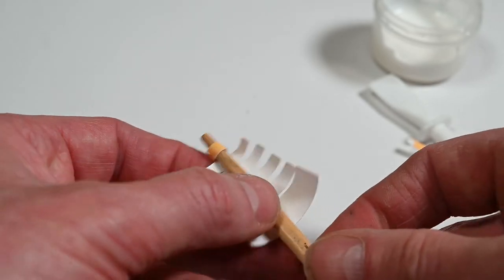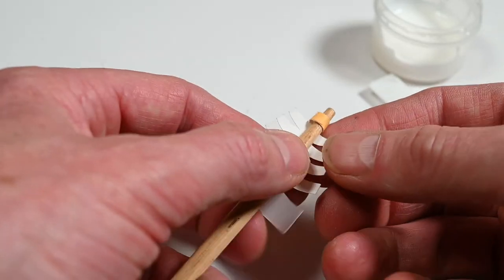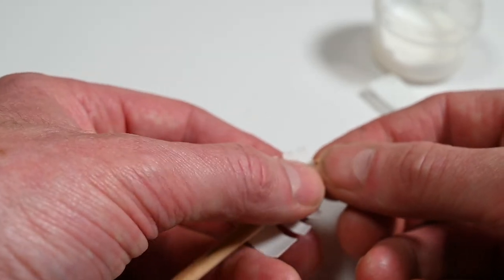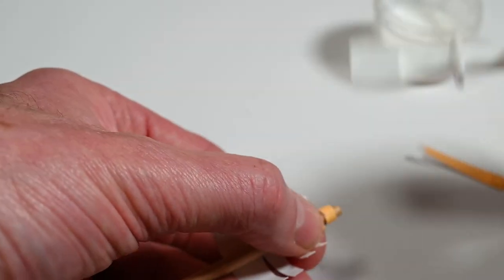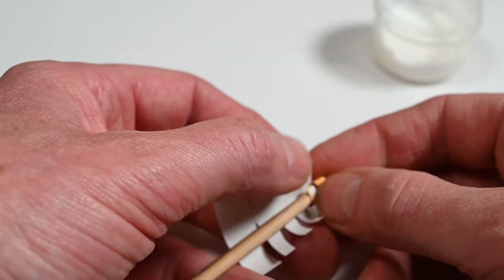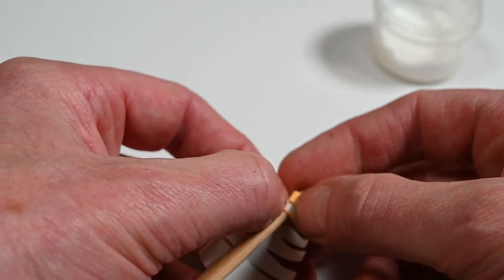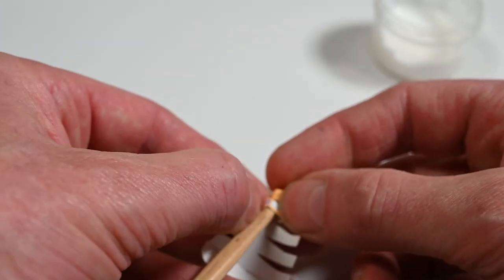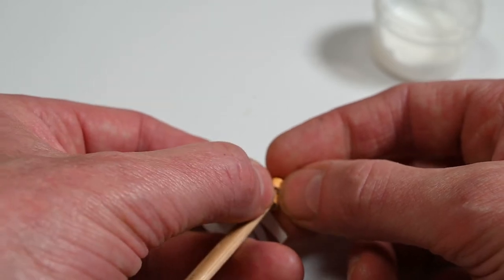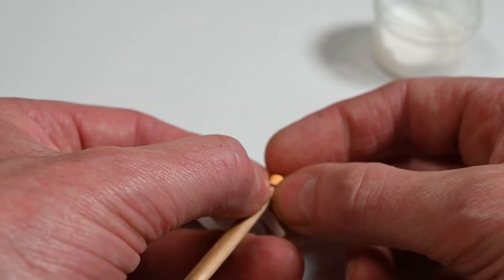So the second one. A little bit of glue. Curve it round. Like that.